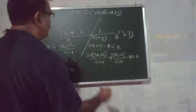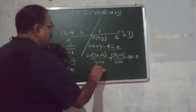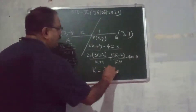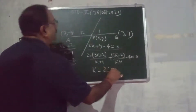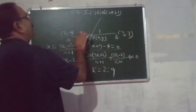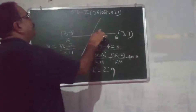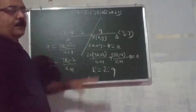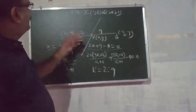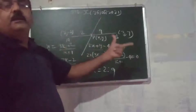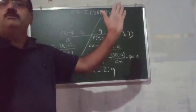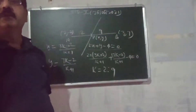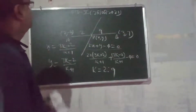The ratio comes out to be 2:9. So when we solve, K gives a ratio of 2:9. That is what we have to find. The ratio becomes 2:9. It means P divides the line AB in the ratio 2:9. This is the answer.